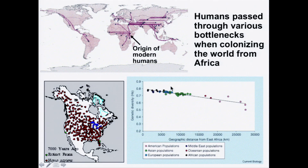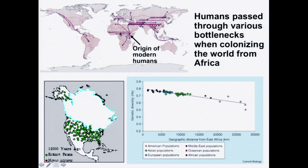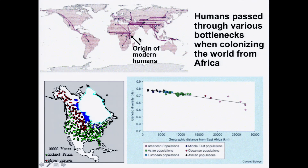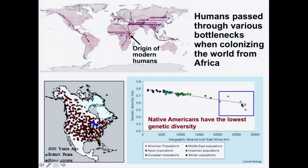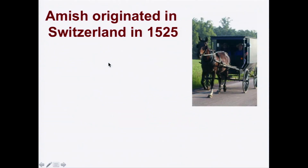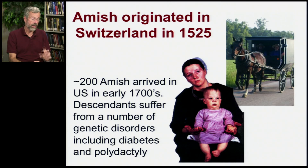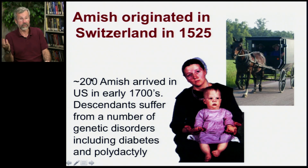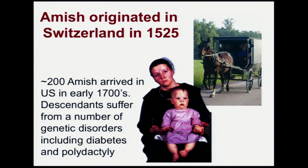What we see in the genetics of modern human populations is that the original African stock has never gone through a bottleneck, so Africans have the most diverse gene pool. As you leave Africa going to Europe and Asia, there's a little less genetic diversity. By the time you get to Native Americans, they have the lowest genetic diversity of any human group.